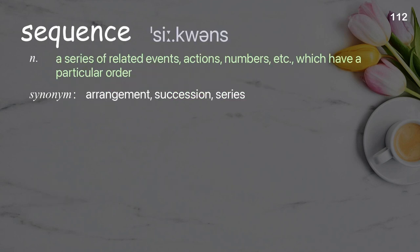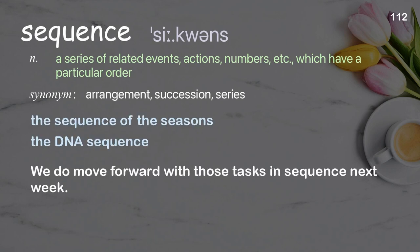Sequence: a series of related events, actions, numbers, etc., which have a particular order. Examples: the sequence of the seasons, the DNA sequence. We do move forward with those tasks in sequence next week.